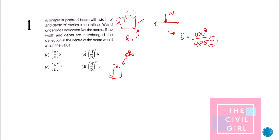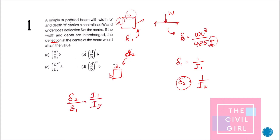From the formula, when the section properties are interchanged only I will change; other things won't change. So delta is inversely proportional to I. Writing δ₂/δ₁ = I₁/I₂, where I₁ = BD³/12 and I₂ = DB³/12. This gives the ratio of deflections. The answer is option B.